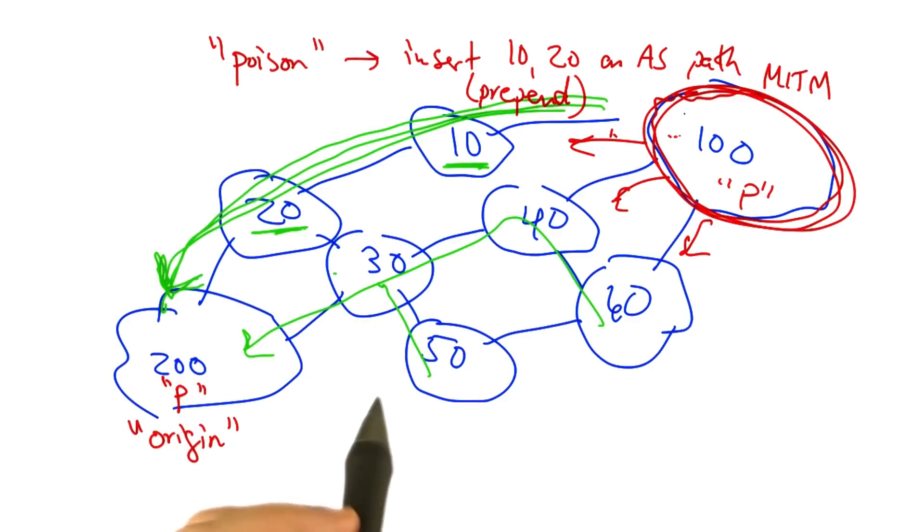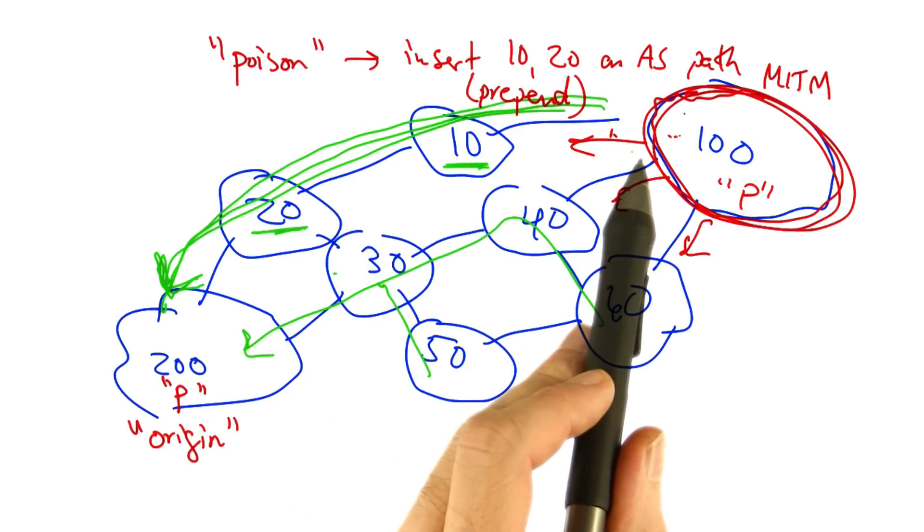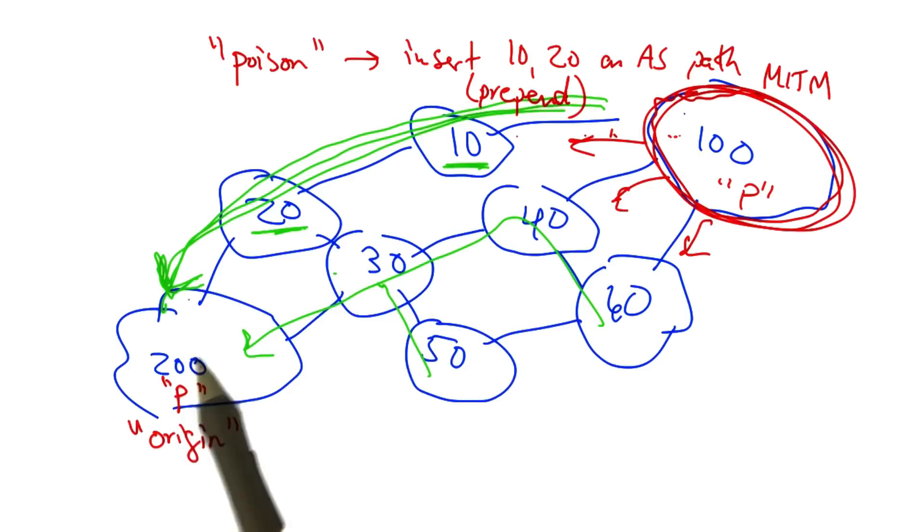On the other hand, the other ASs on the internet, in other words, every other AS that's not on the path back from 100 to 200, will switch.